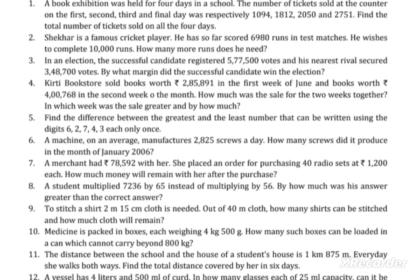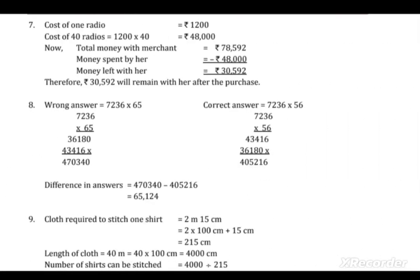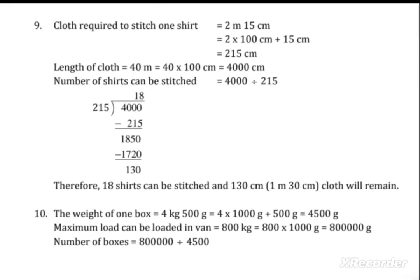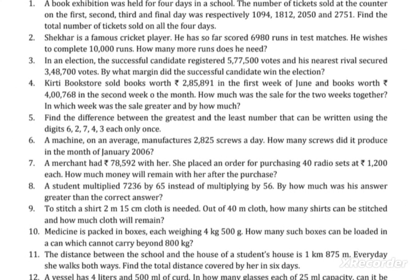The eleventh question: the distance between a student's school and house is 1 km 875m. Every day she walks both ways. Find the total distance covered by her in 6 days. The distance one way is 1.875 km, so for both ways in one day it is 2 × 1.875 km, and then multiply by 6 days for the total distance.